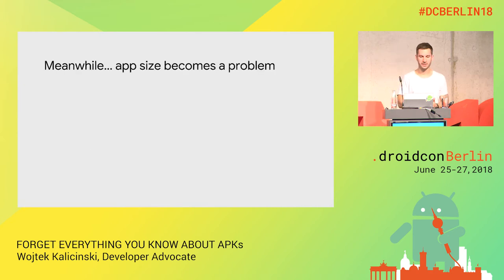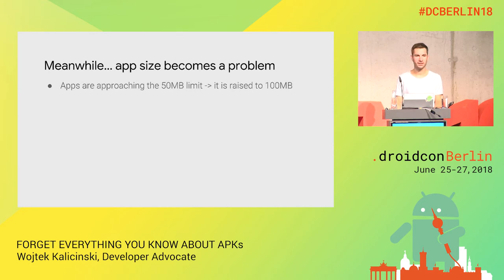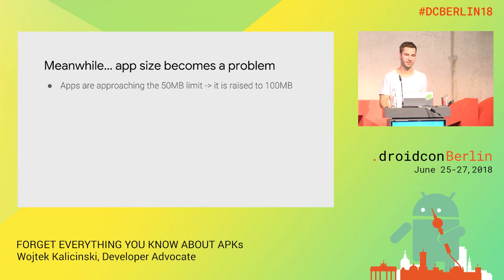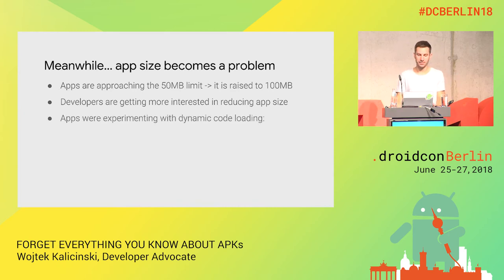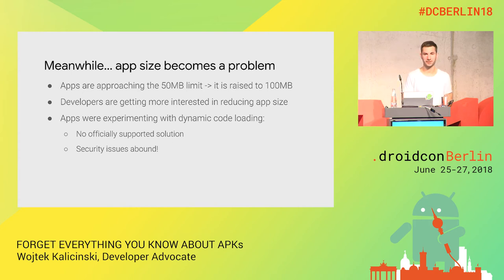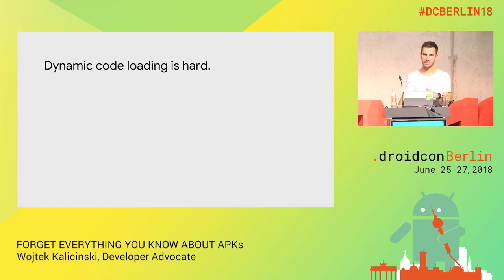As time passed, app size became a problem. It was steadily going up, not as fast as storage on devices or internet connection speeds and prices. At some point the Play Store limit was 50 megabytes. Some very popular apps started reaching that limit and were afraid to add new features, so it had to be raised to 100 megs. Developers became more and more interested in APK size. Around the same time, apps were experimenting a lot with dynamic code loading, but there was no officially supported solution by Play or Google.